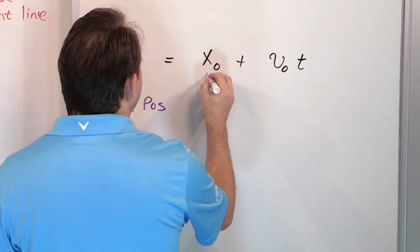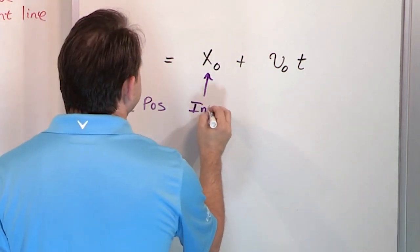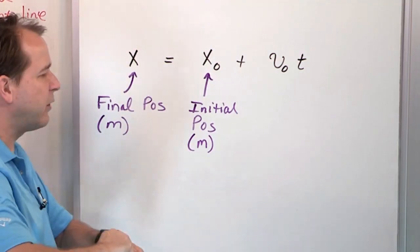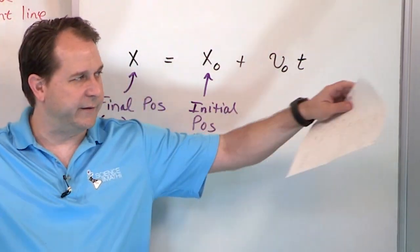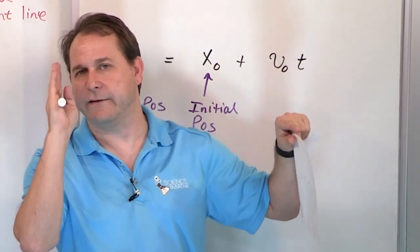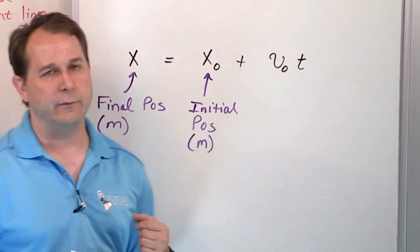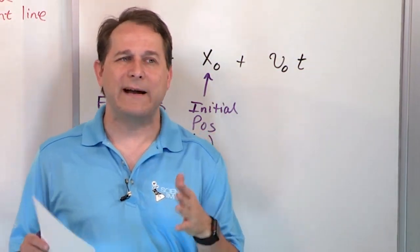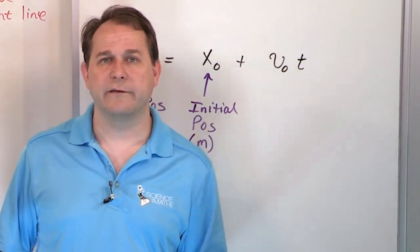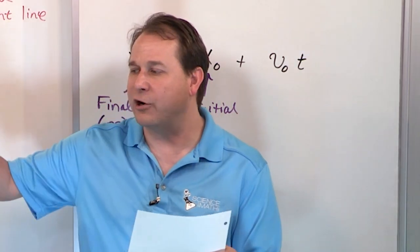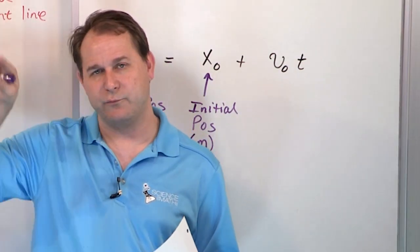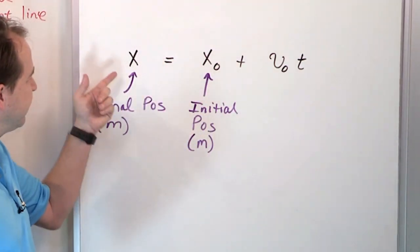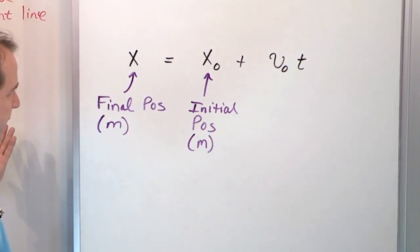This one right here — x naught — is your initial position, also in meters. Almost always when you start a problem, you're going to be starting at position zero. You'll put a number line, start the clock at zero seconds, and start your motion at x equals zero, so x naught will be zero and you'll just stick a zero in there. But sometimes I may give you a problem where the race car starts 5 or 6 meters away from the starting point — then your initial position would go in there. Literally, x is where you end up, and x naught is where you start from, in meters.